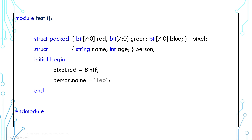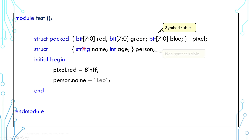A structure variable may be synthesizable depending on its members. If all its members are numerical variables, then it is synthesizable. If it contains a non-numerical type like a string variable, then it is not synthesizable.